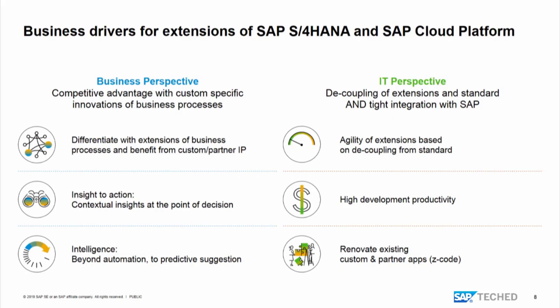With S4HANA Cloud today, for example, you get an update every quarter — a new product version in essence. If you do your own innovation, you may want to have daily delivery capability. So you have different innovation cycles: what SAP standard software delivers versus what you may want to do on your own. This also speaks to development productivity — you can be much more productive in a separate system that allows very fast deliveries and development.